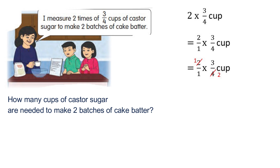Do cancellation with two and four, then multiply numerator with numerator and denominator with denominator. You will get three over two. Now convert the improper fraction to a mixed number — we will have one and one over two cups.